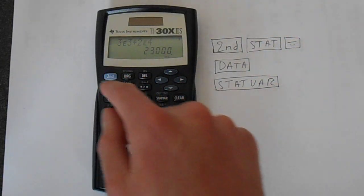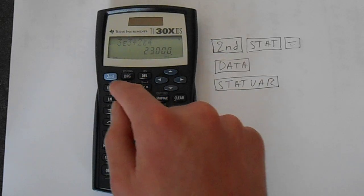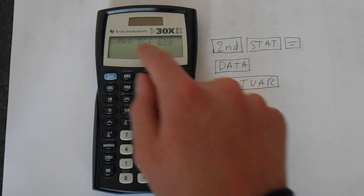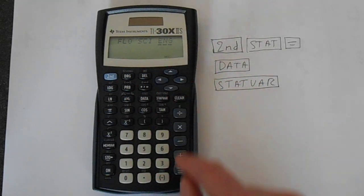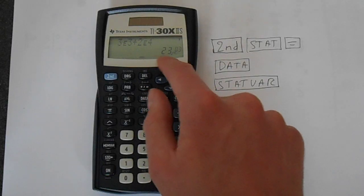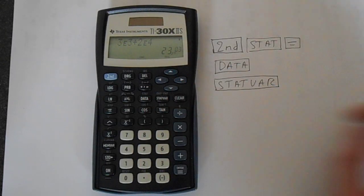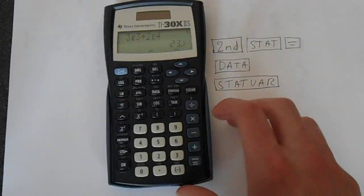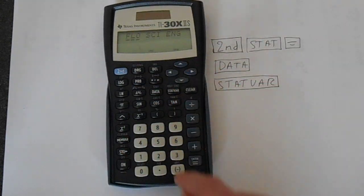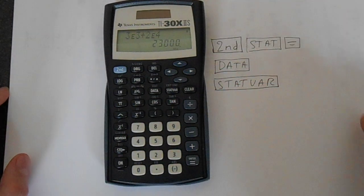You can actually convert it into different modes so it will display it in different ways. So second function, and there's scientific notation and engineering. This gives you this: 23 times 10 to the power of 3, which is 23,000. So let's put that back to floating.